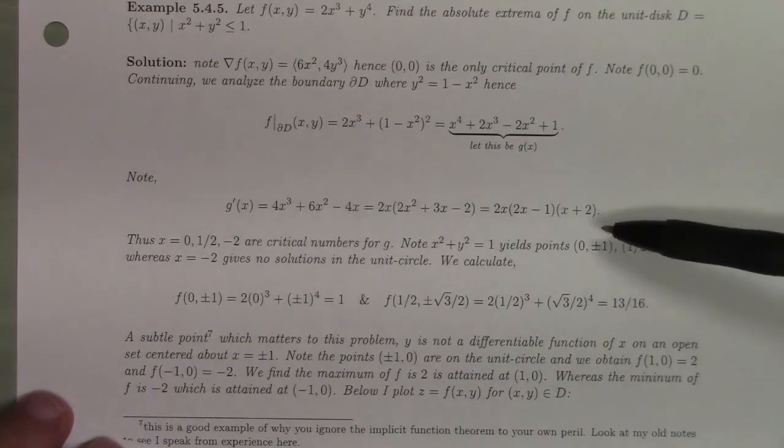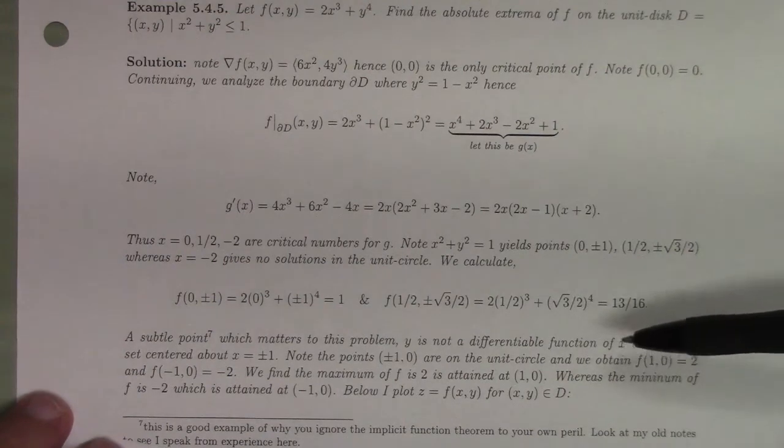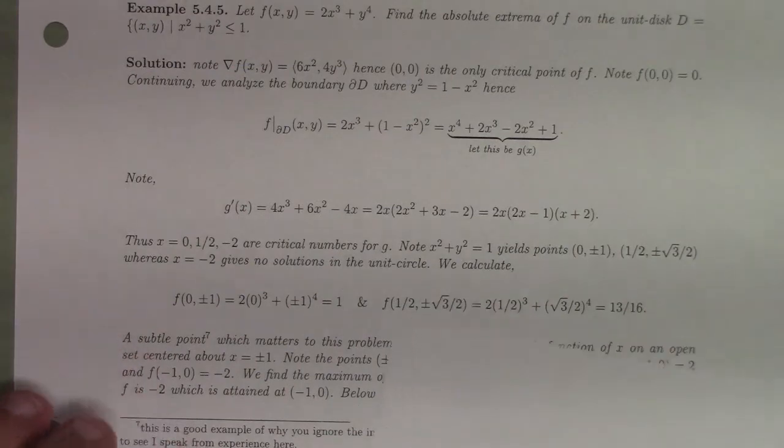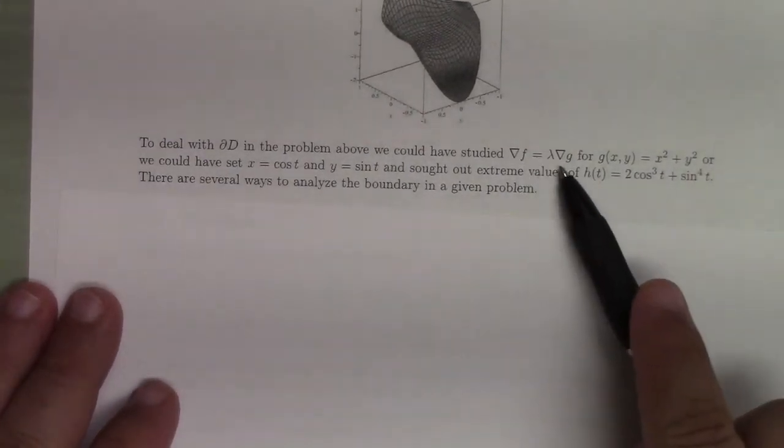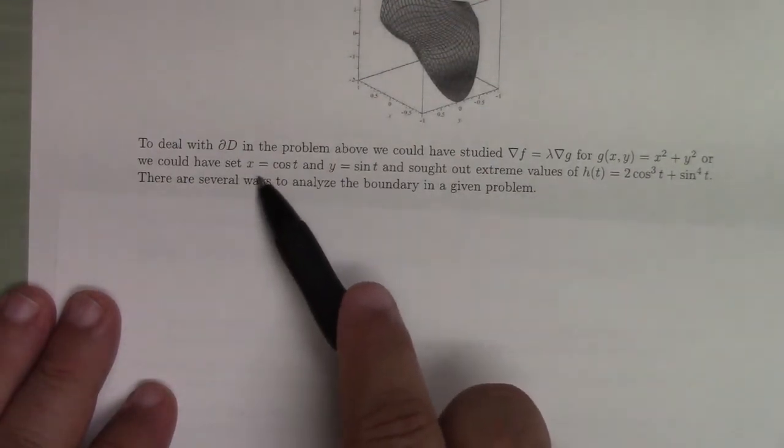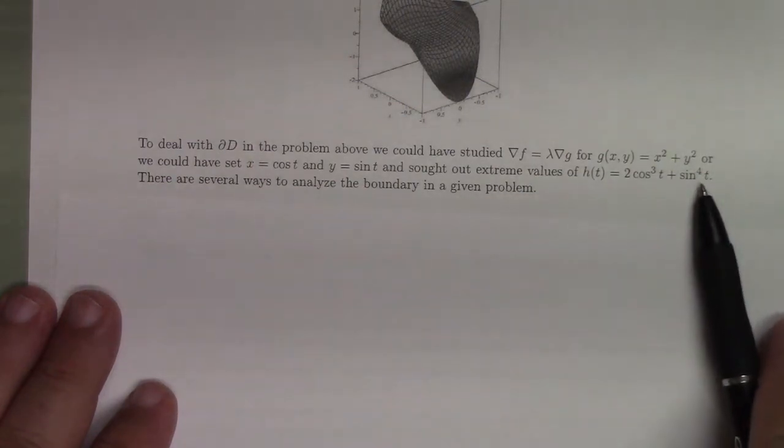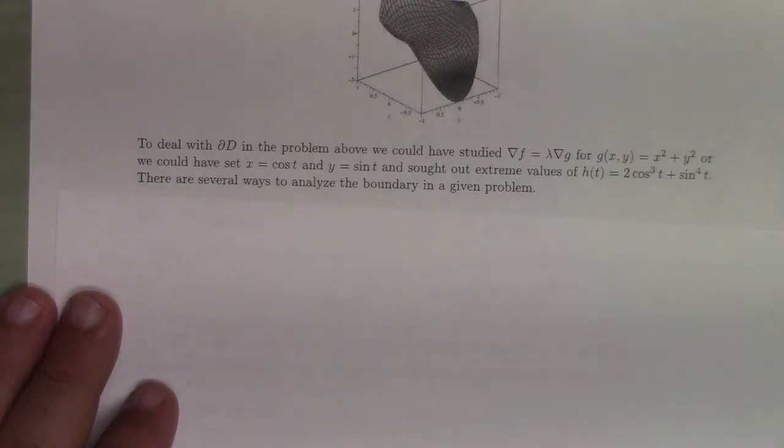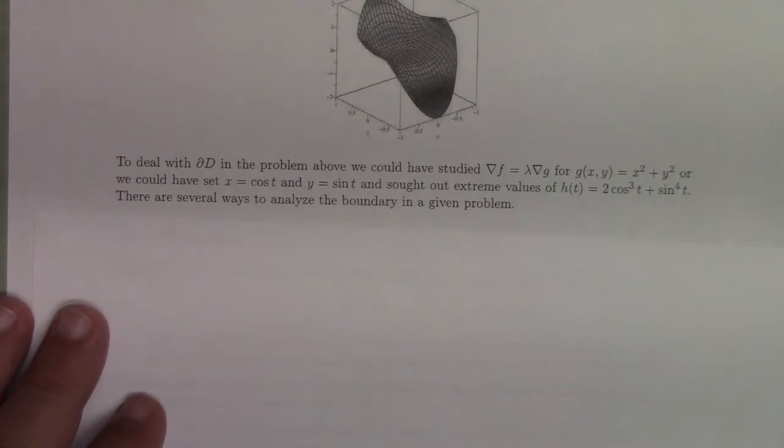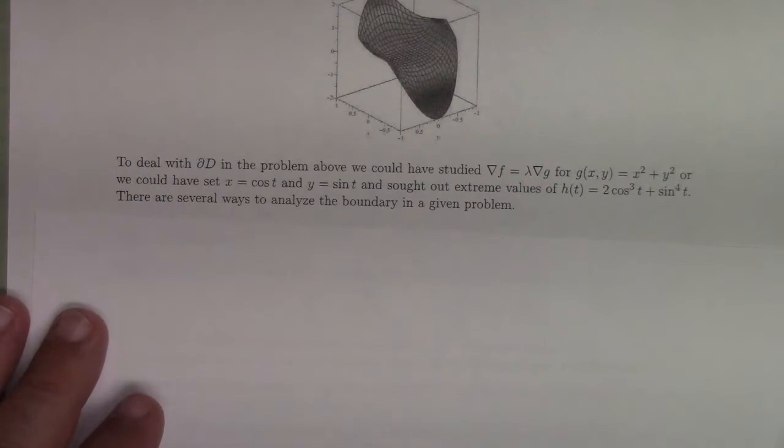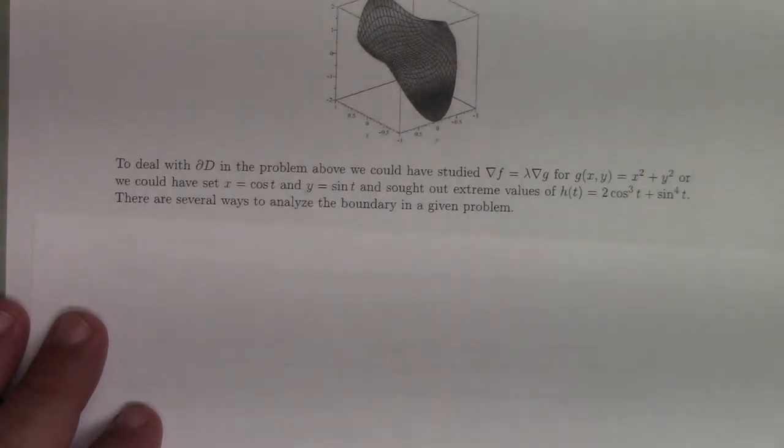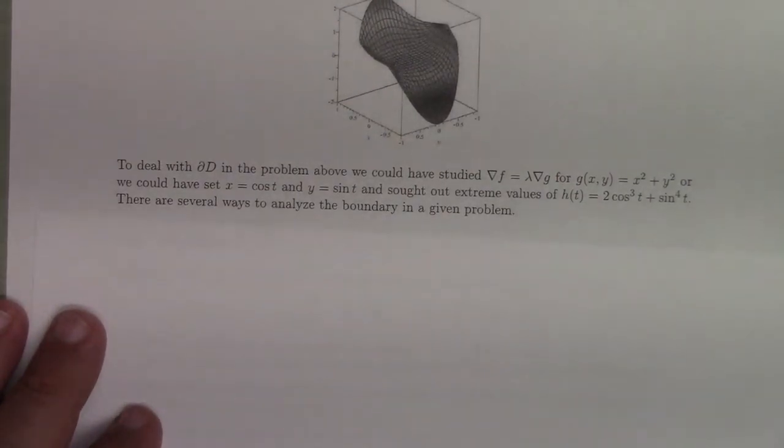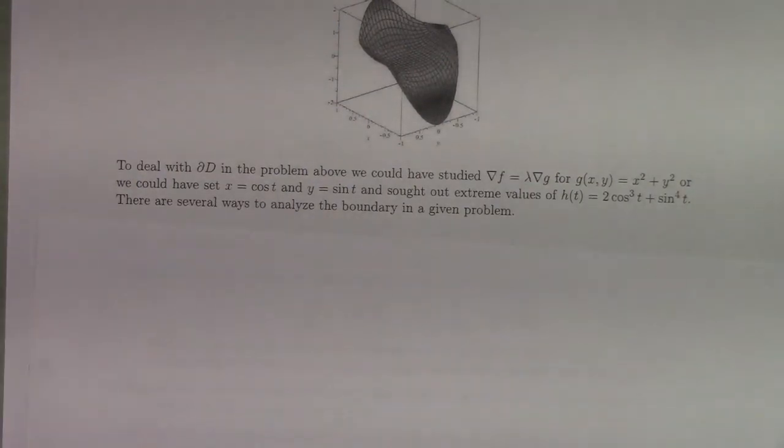To avoid that, you could use cosine t, sine t for the parametrization. Or, better yet, you could use the Lagrange multiplier method. To deal with the boundary of d, we could have studied gradient of f is equal to lambda gradient of g, or we could have set x equal to cos and y equal to sine and sought out extreme values for that. Just to warn you, you should be a little bit careful about parametrizing the edge. Because if you have a parametrization which is not differentiable, if there are artifacts of undifferentiability in your parametrization, and then you apply the closed set test through the parametrization plugged into your objective function, you could miss things. Because where the differentiability breaks down, you're not going to pick it up in your critical analysis, necessarily.